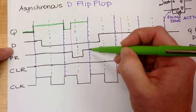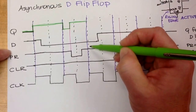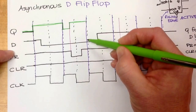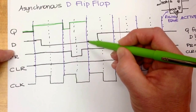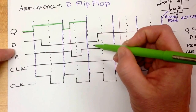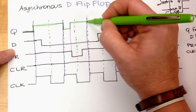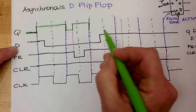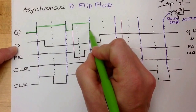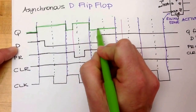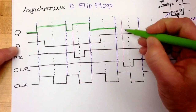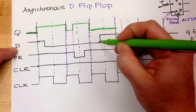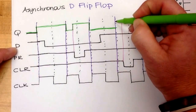I come to the next clock edge. I look at my preset and my clear — they're both at one, so they're inactive, they're turned off. So I look at D, and D is zero, so it's going to go down and start to travel across. But I get to the next edge and D has changed back, so I'm going to go high again.